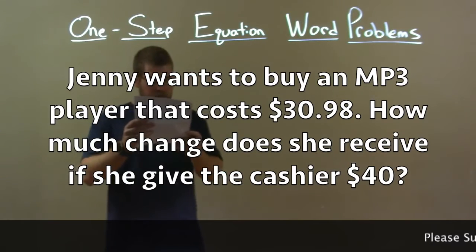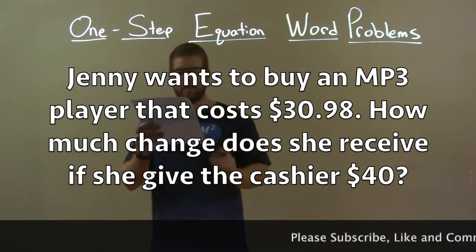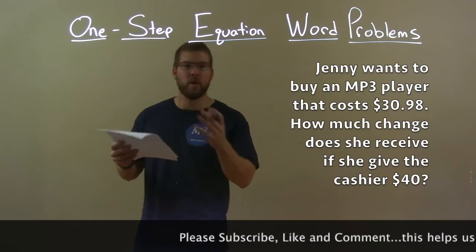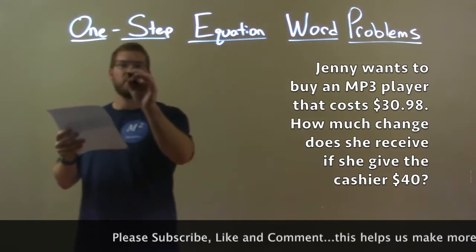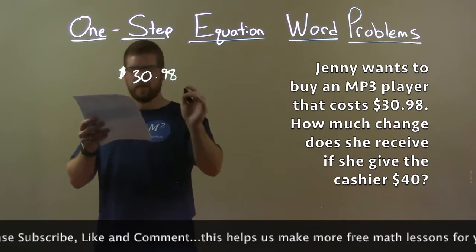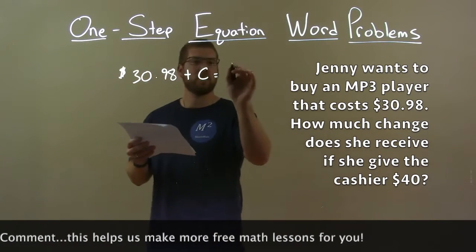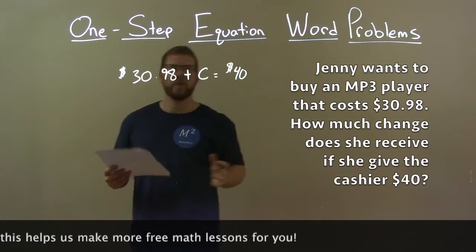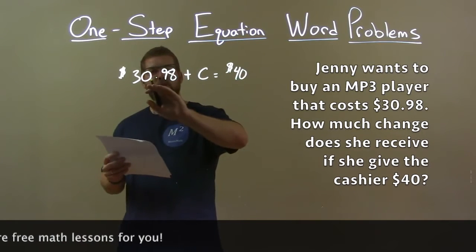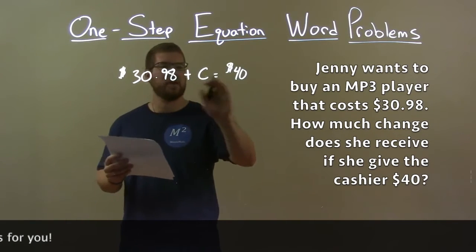Jenny wants to buy an MP3 player that costs $30.98. How much change does she receive if she gives a cashier $40? The cost of the MP3 player, $30.98, plus the change C that Jenny will receive equals a total of $40.